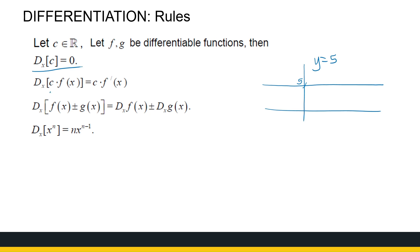The next one, the derivative of a constant times a function is the same as a constant times the derivative of a function. The third rule we have here is that the derivative of the sum of two functions is the same as the sum of the derivative of those two functions. And the last one is the power rule. For n, any real number, x to the power n's derivative is n times x to the power n minus 1.